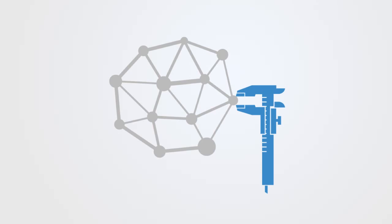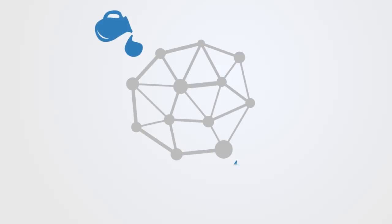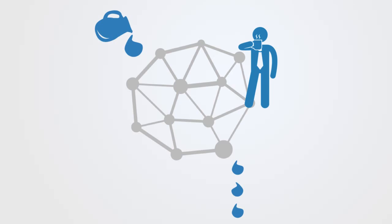Because a network can be considered a description of the paths along which something flows, the significance of any agent to that network can be understood in terms of how much of the network's resources flow through that node and how critical it is to that flow. Both of these factors give the agent the capacity to influence whatever is flowing, and it is from this that they derive their influence within the network.